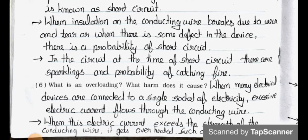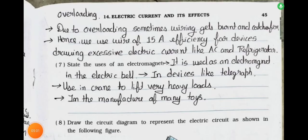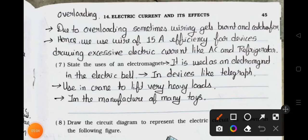Question number six: What is overloading? What harm does it cause? Answer: When many electrical devices are connected to a single socket, excessive electric current flows through the conducting wire. When this electric current exceeds the strength of the conducting wire, it gets overheated. Such a situation is called overloading. Due to overloading, sometimes wiring gets burnt and catches fire. Hence we use wire of 15A efficiency for devices drawing excessive electric current like AC and refrigerator.